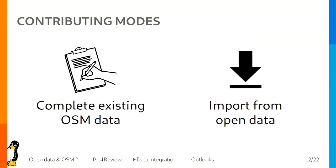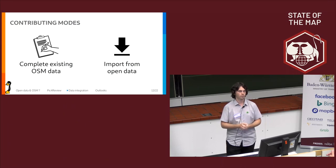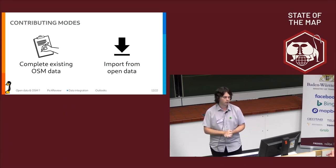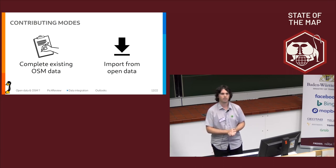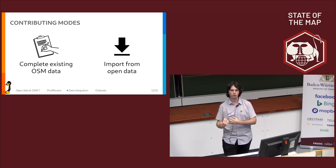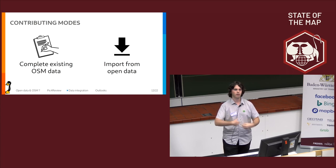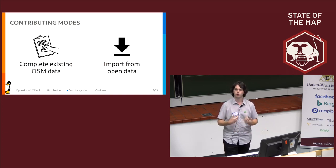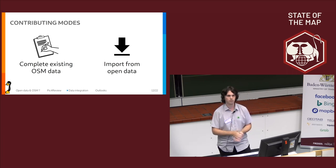There are mainly two contributing modes in this tool. First, completing existing OpenStreetMap data — we take data from Overpass and say I want to add information like accessibility, shelter, or whatever. Or second, we can import open data, taking information from the city council or government and importing it into OpenStreetMap, but not in bulk — feature by feature, to be sure we are not importing something that doesn't exist in reality.